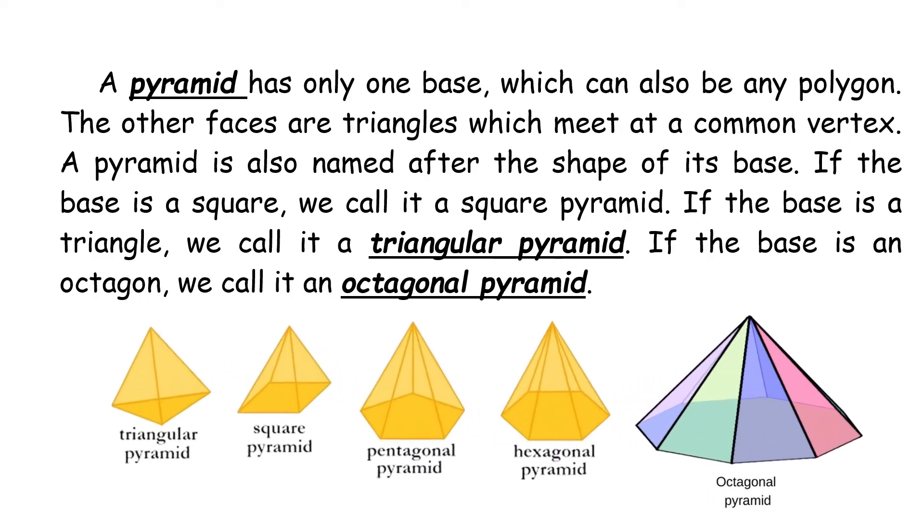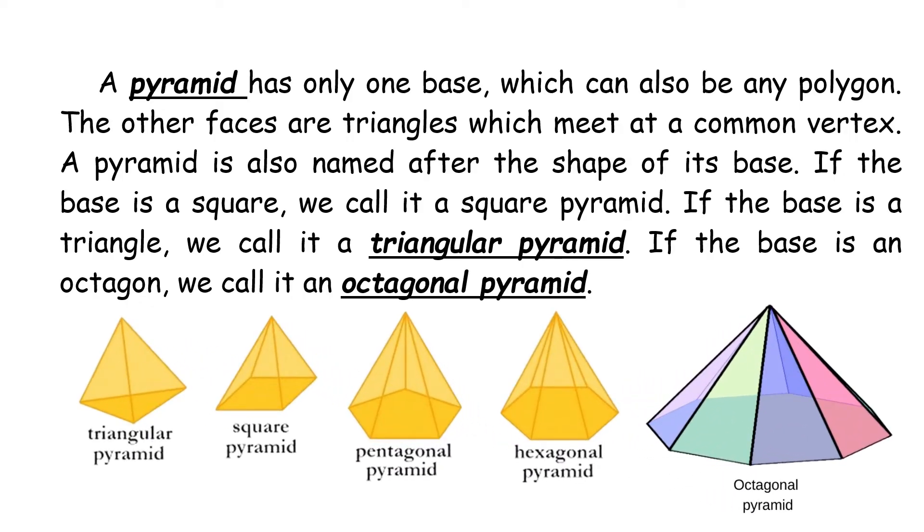Let us see this figure. Yung nasa ilalim or base niyan is triangle. Yung number one, triangular. Second one is square pyramid. Number three, since it is pentagon, ang base, pentagonal. And so on. Yung hexagon, hexagonal pyramid. Six hexagon ang base. And the last one is octagonal. Meaning, ang base niyan is octagon.